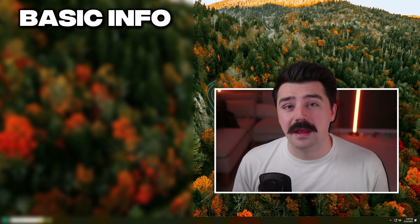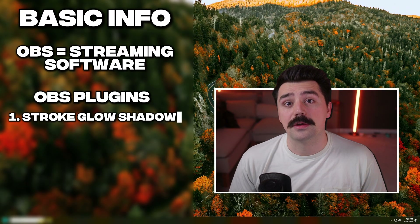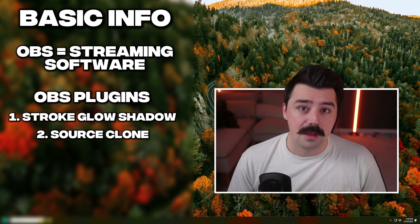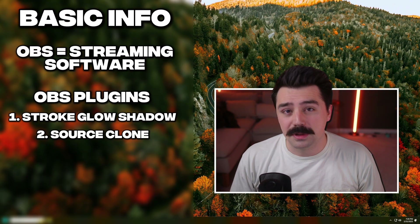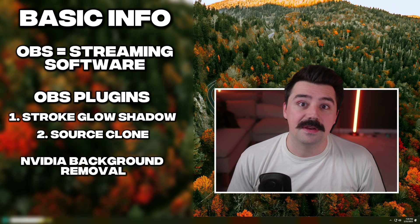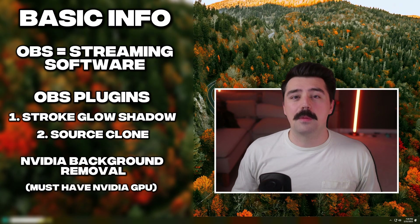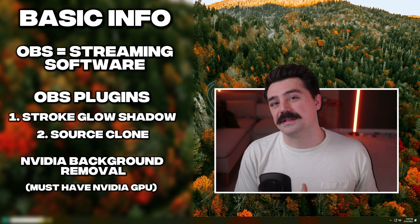Some basic information before we get started. I am using OBS as my broadcasting software, which allows for plugins. I'm going to be using two different plugins: stroke glow shadow and source clone — both listed in the description below. The last app is NVIDIA background removal, which requires an NVIDIA graphics card. I wanted to put that workload on my graphics card instead of the rest of my computer. Please don't get intimidated — this is a lot simpler than you think.